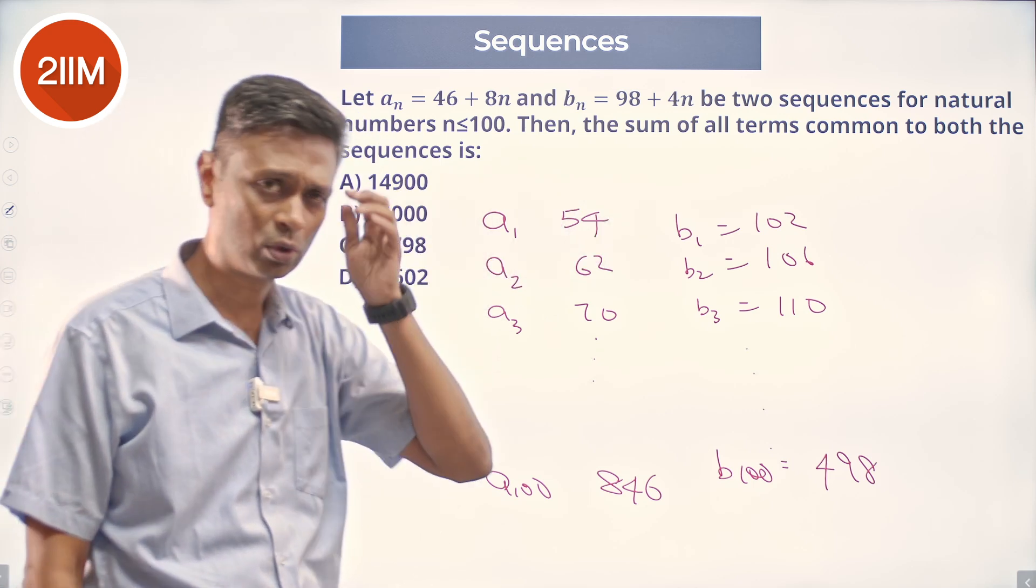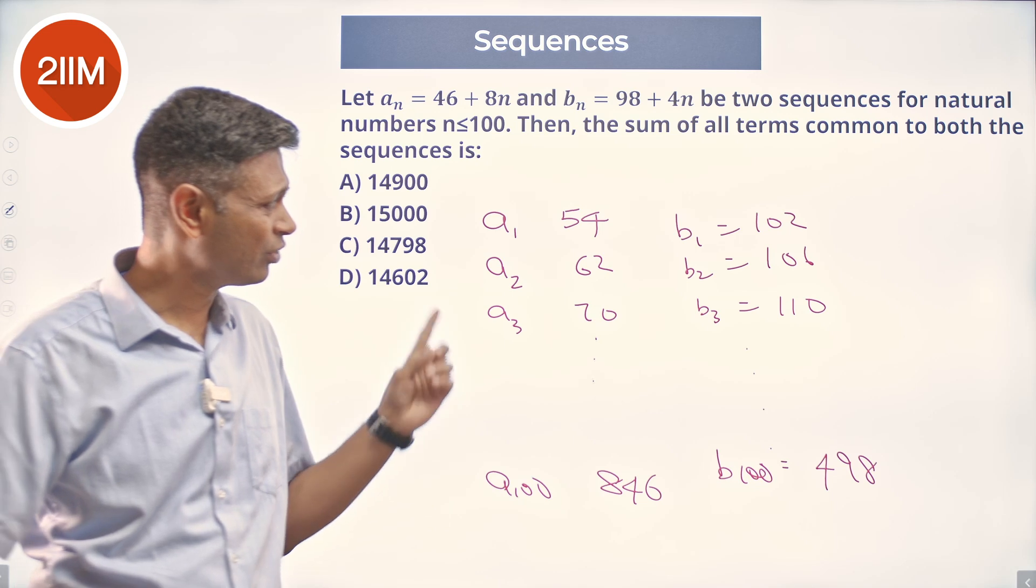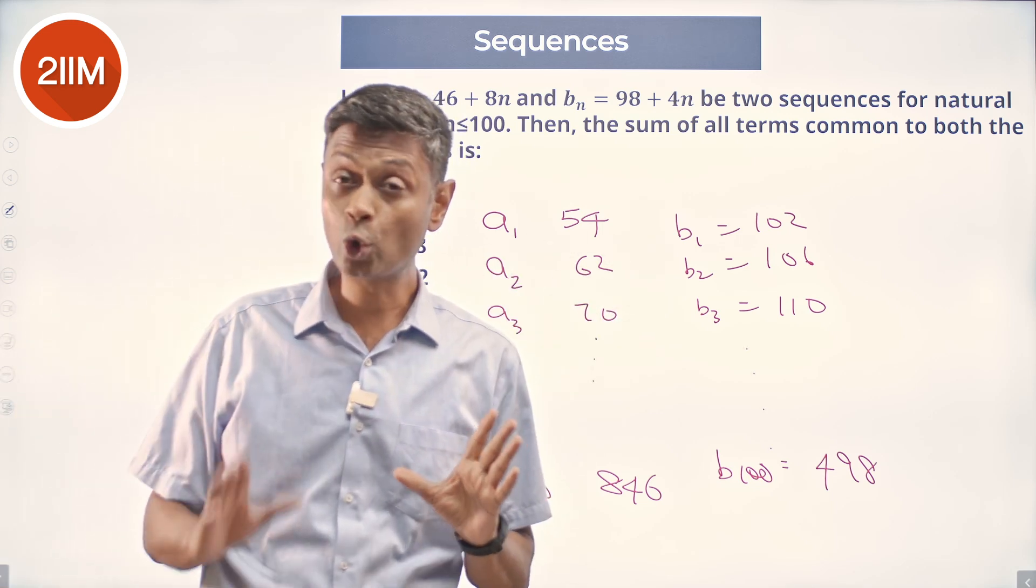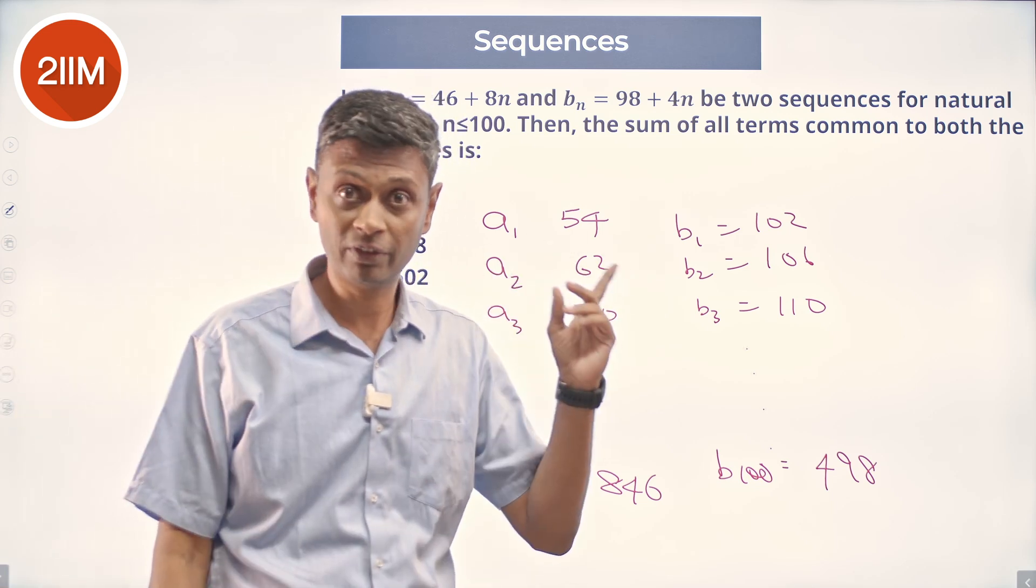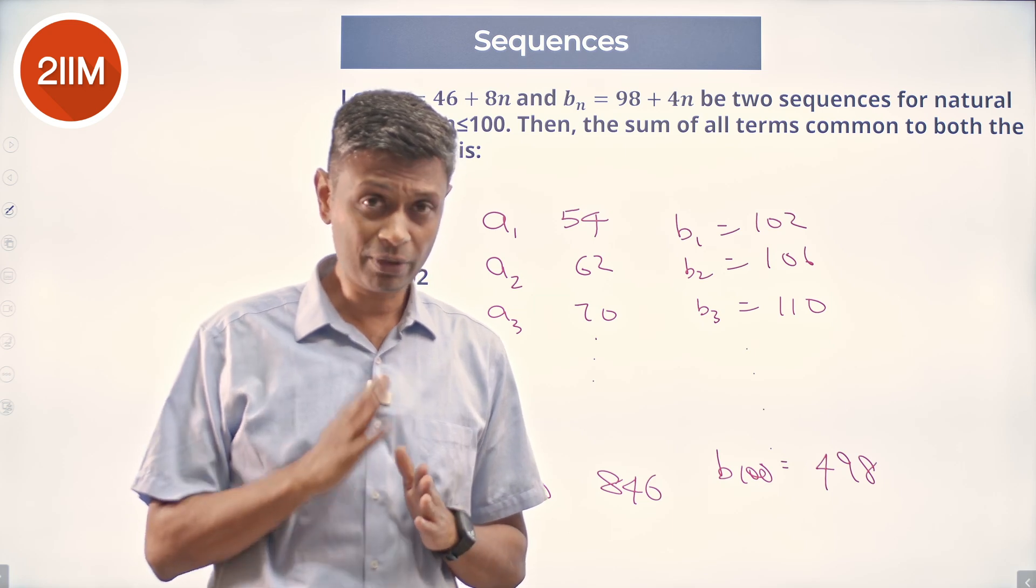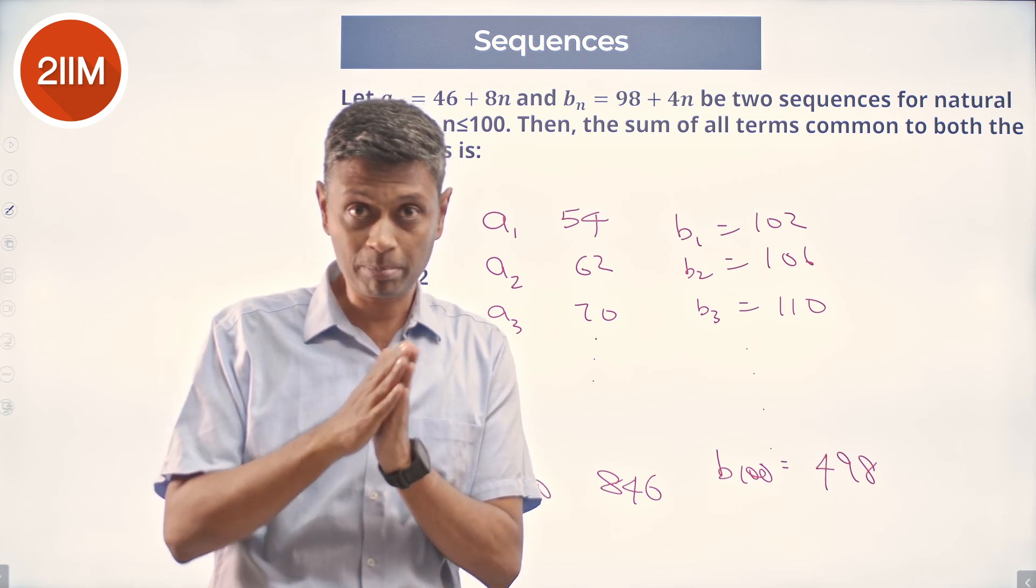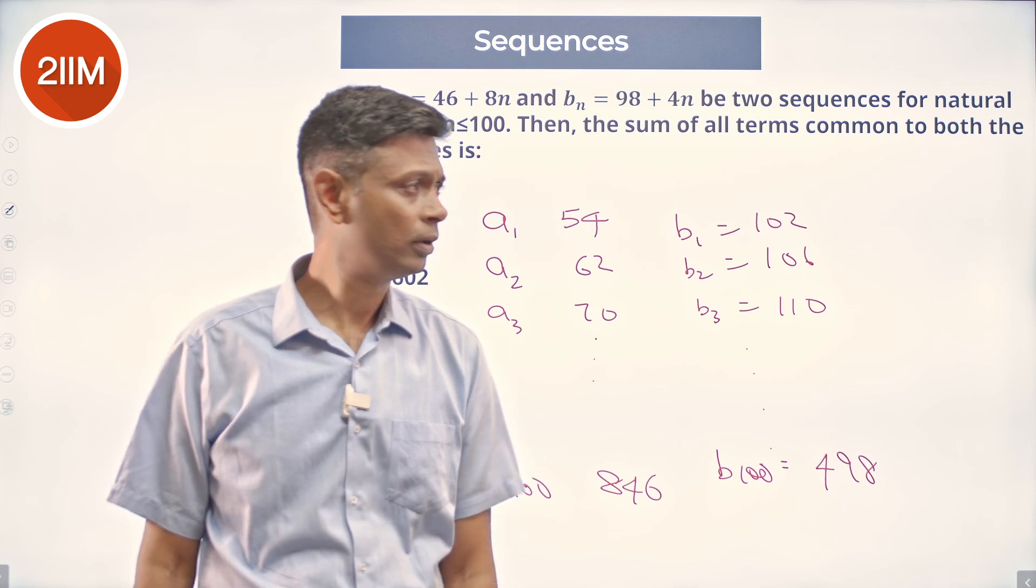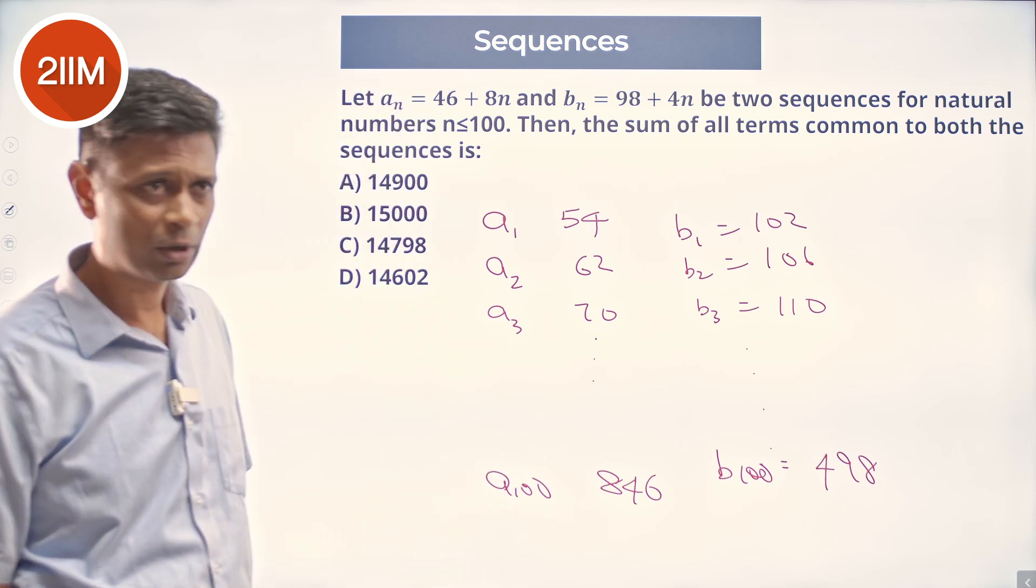This goes in steps of 8, that goes in steps of 4. So if there is one common term, then from then on, that number plus 8 will be part of the sequence.